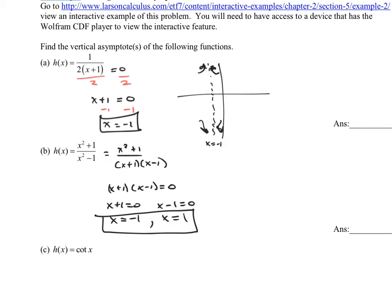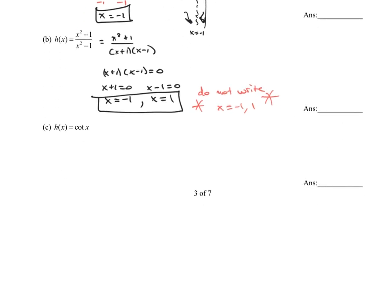You absolutely cannot write, do not write x equals negative 1 comma 1. That is absolutely wrong to do. Because that shows that those are x values as a number, and this isn't a number, this is the equation of a line. Let's look at the next one.